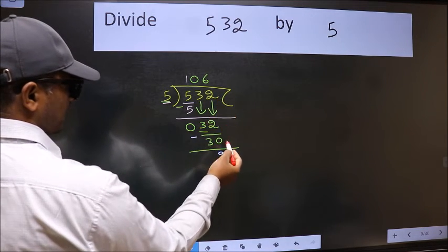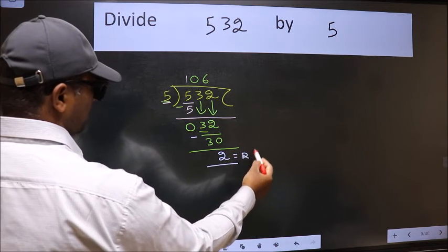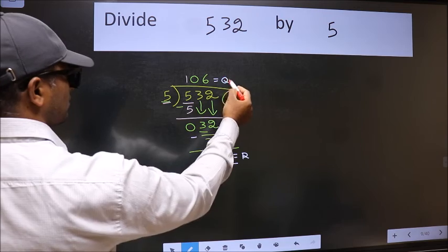No more numbers to bring down. So we stop here. This is our remainder and this is our quotient.